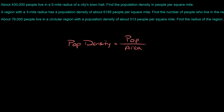Let's start with the first problem, 1A. This says about 430,000 people live in a five-mile radius of a city's town hall. Find the population density in people per square mile. For this first problem we want to find the population density, so the problem gave us the population — 430,000 people — and the area, which is described as a five-mile radius.